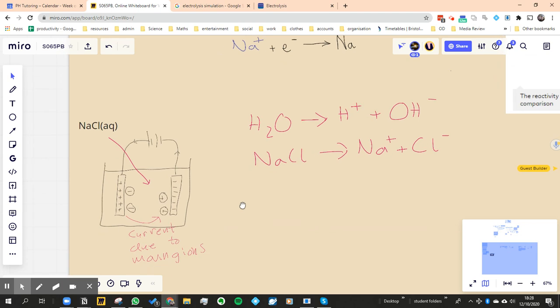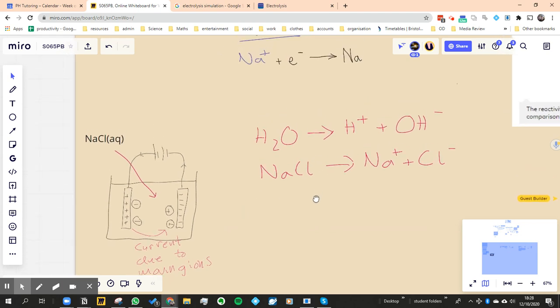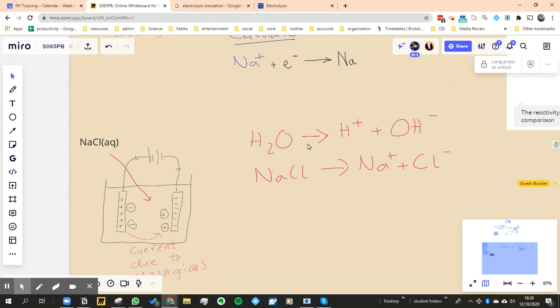It gets more complicated because we don't know what's going to happen in each case because we've got inside the water, before we've even turned on the battery, we've got this water turning into H plus and OH minus, and we've got the sodium chloride turning into Na plus and Cl minus.